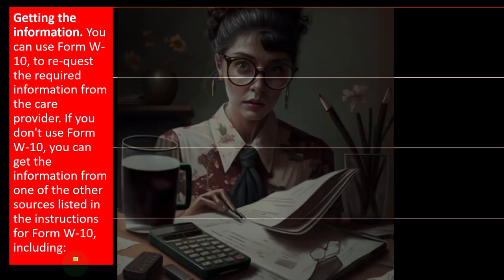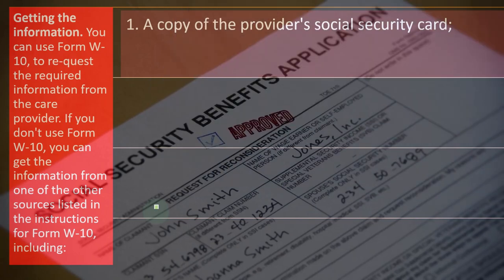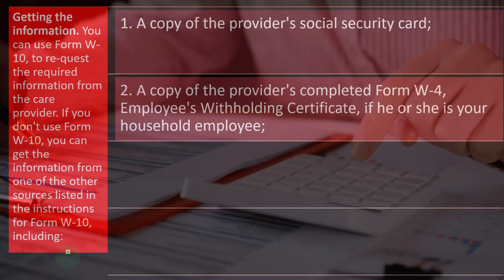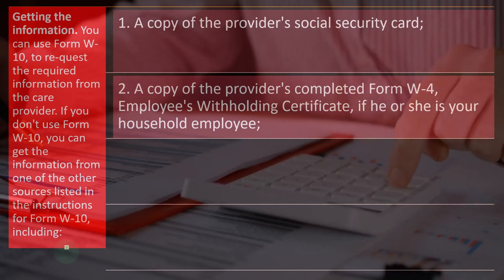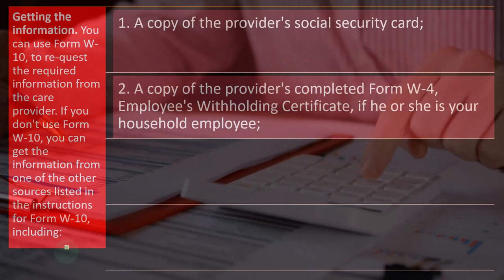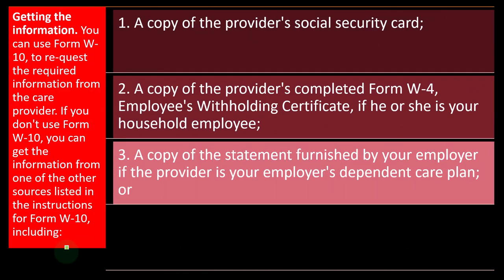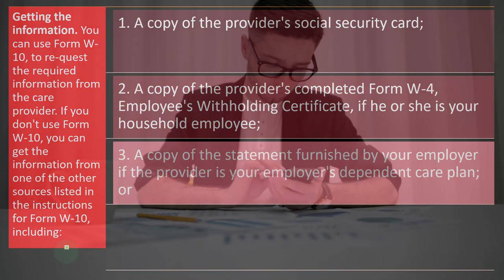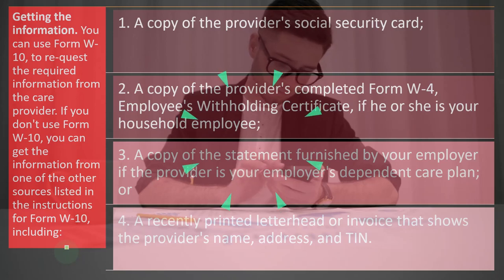You can use Form W-10, available on the IRS website, to request the required information from the care provider. If you don't use Form W-10, you can get the information from other sources listed in the instructions for Form W-10, including: one, a copy of the provider's Social Security card; two, a copy of the provider's completed Form W-4, Employee's Withholding Certificate, if he or she is your household employee; three, a copy of the statement furnished by your employer if the provider is your employer's dependent care plan; or four, a recently printed letterhead or invoice showing the provider's name, address, and TIN.